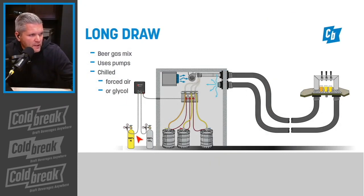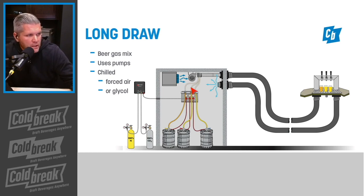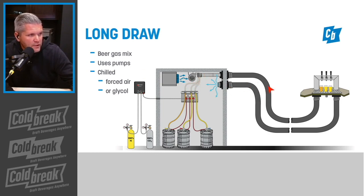Here we have the same types of setup. We've got gas feeding to the keg; the gas pushes down on the keg. The beer goes up through the keg into the beer line and then into the main trunk line. The trunk line here would be a glycol or air-chilled system that goes into barrier tubing.